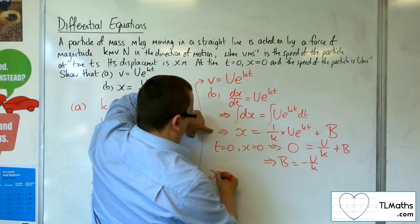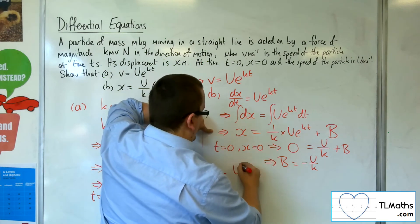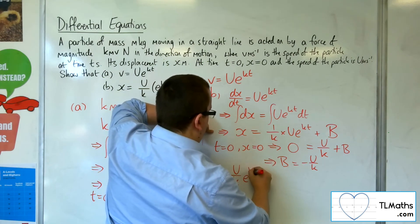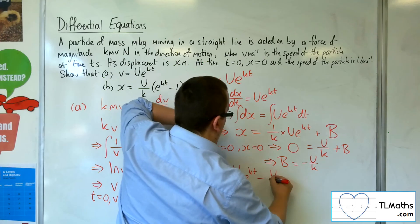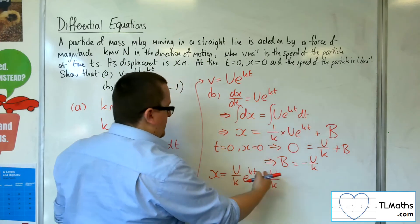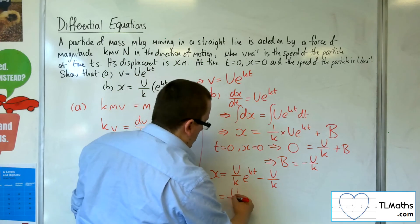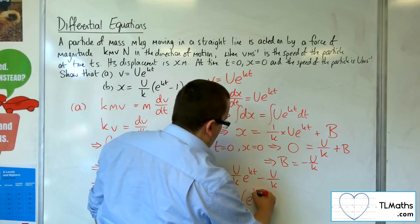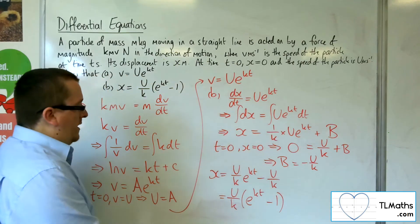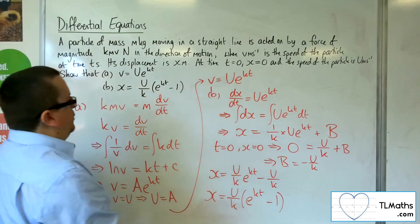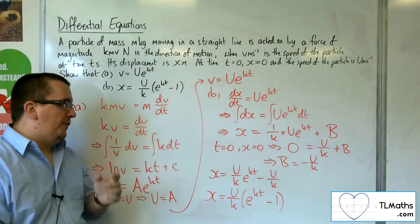So x equals u over k e to the kt minus u over k. If I factor the u over k out of a bracket, I'm going to have e to the kt minus one inside the bracket, which was precisely what we wanted to find.